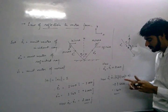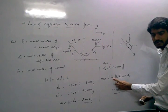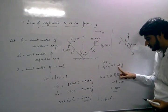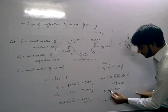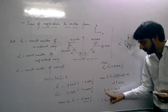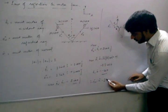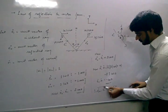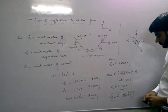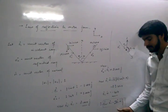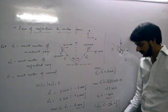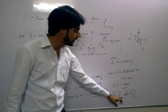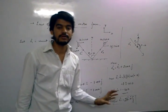Therefore, instead of cos theta we can substitute: cos theta = −(E1 · N). So the final relation becomes: unit vector E2 = unit vector E1 − 2(E1 · N) · ĵ. Since ĵ represents the normal direction N, the final law of reflection in vector form is: E2 = E1 − 2(E1 · N) N. This is the required relation between the incident ray, reflected ray, and normal in vector form.